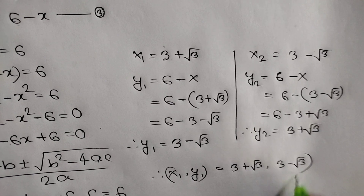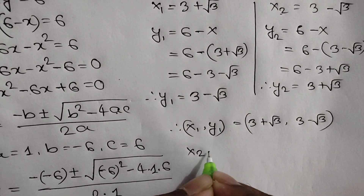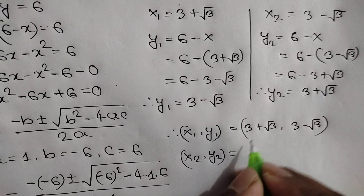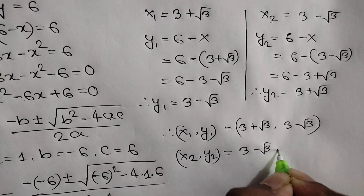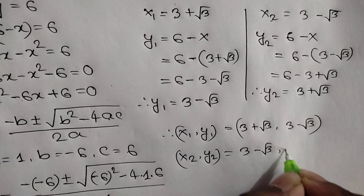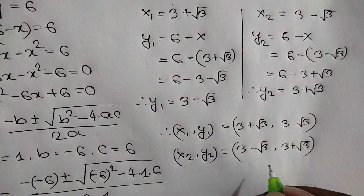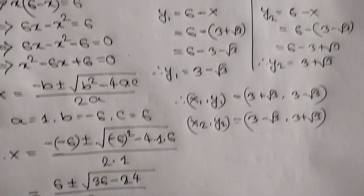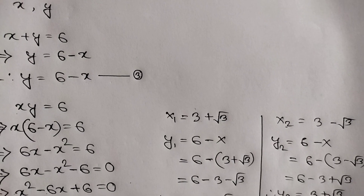So the solution pairs are: x1, y1 is equal to (3 plus root 3, 3 minus root 3) and x2, y2 is equal to (3 minus root 3, 3 plus root 3). Thank you for watching. If you like this video, please subscribe to my channel, and see you in the next video. Bye bye.